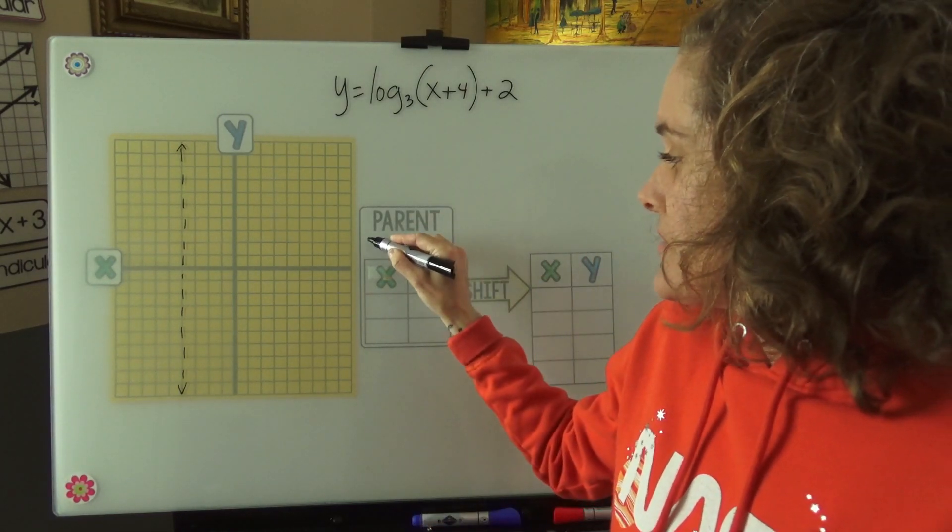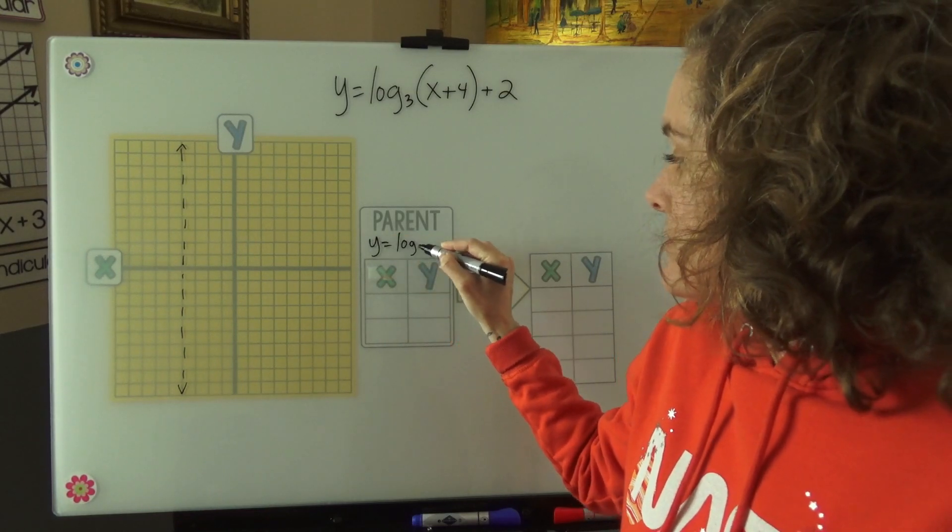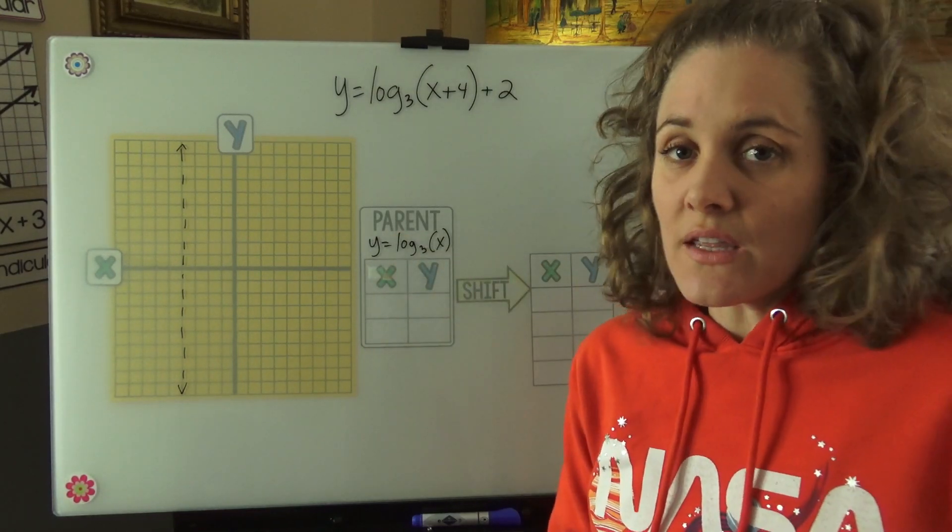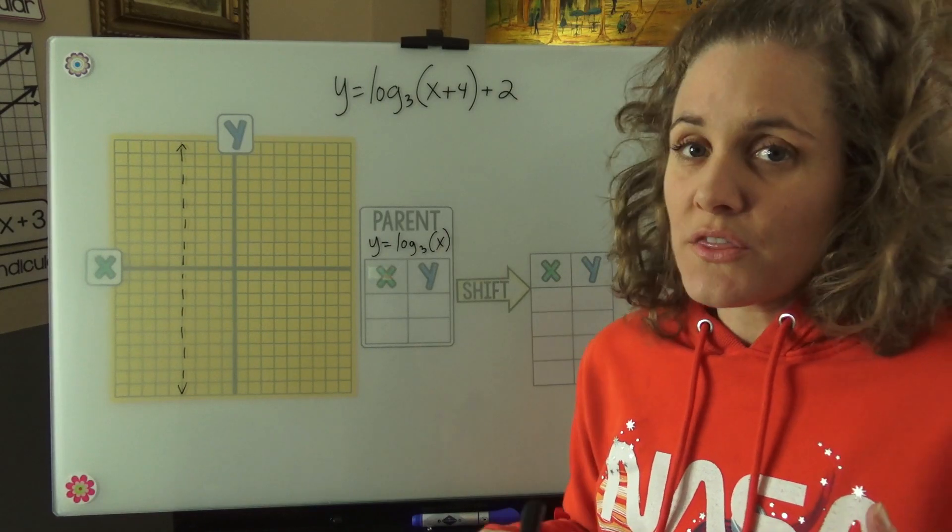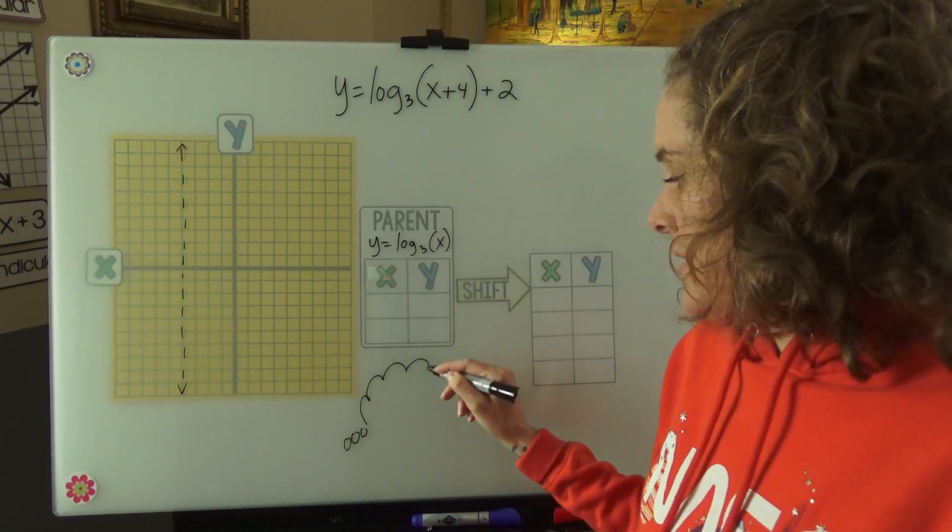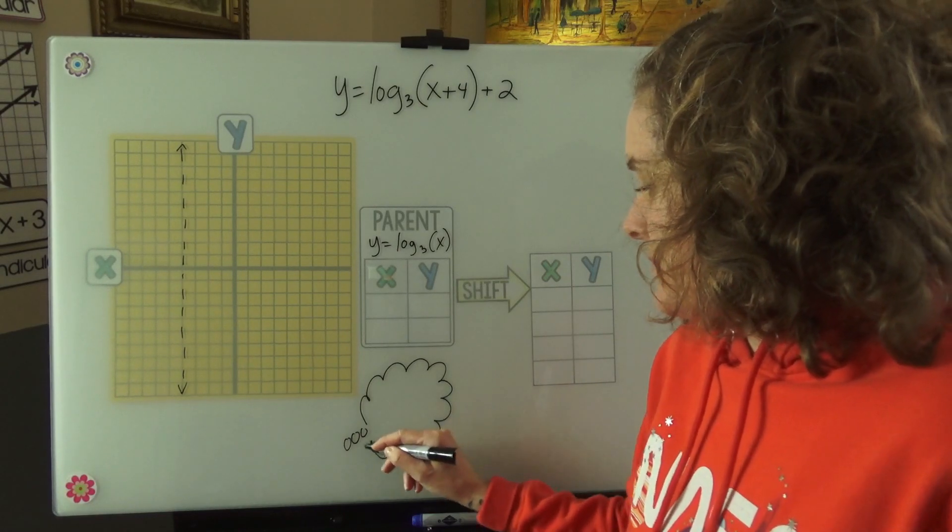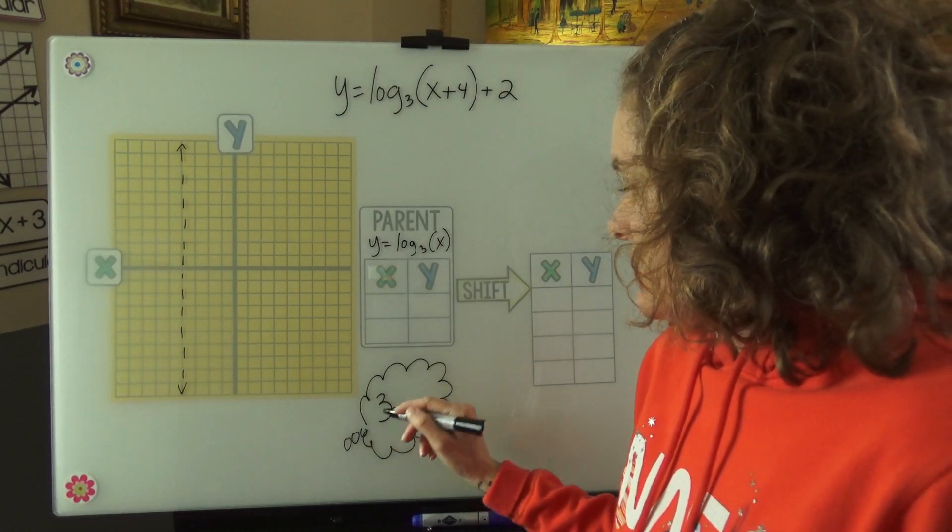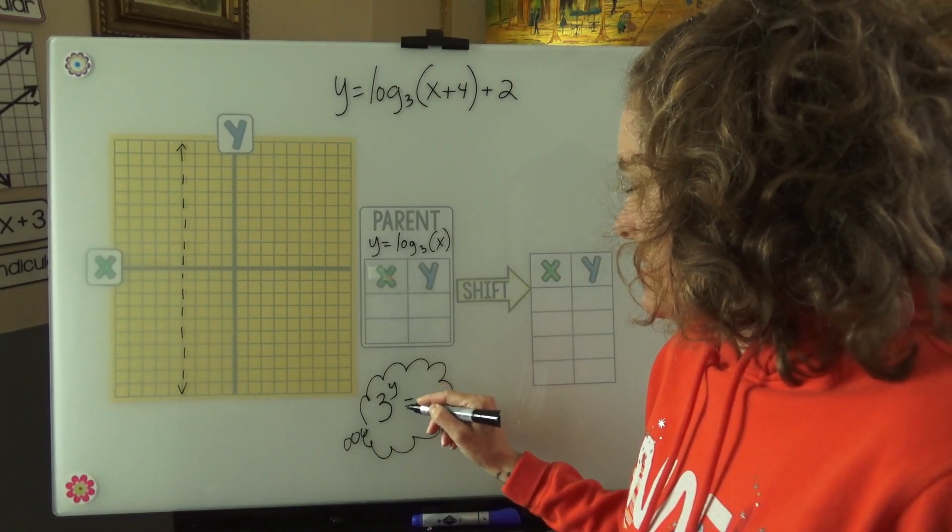So let's create our parent equation first. We're going to drop off the shifts but leave the base. And we can think of these as 3 to what is what? Let me put a little thought bubble here. 3 to the y is x.